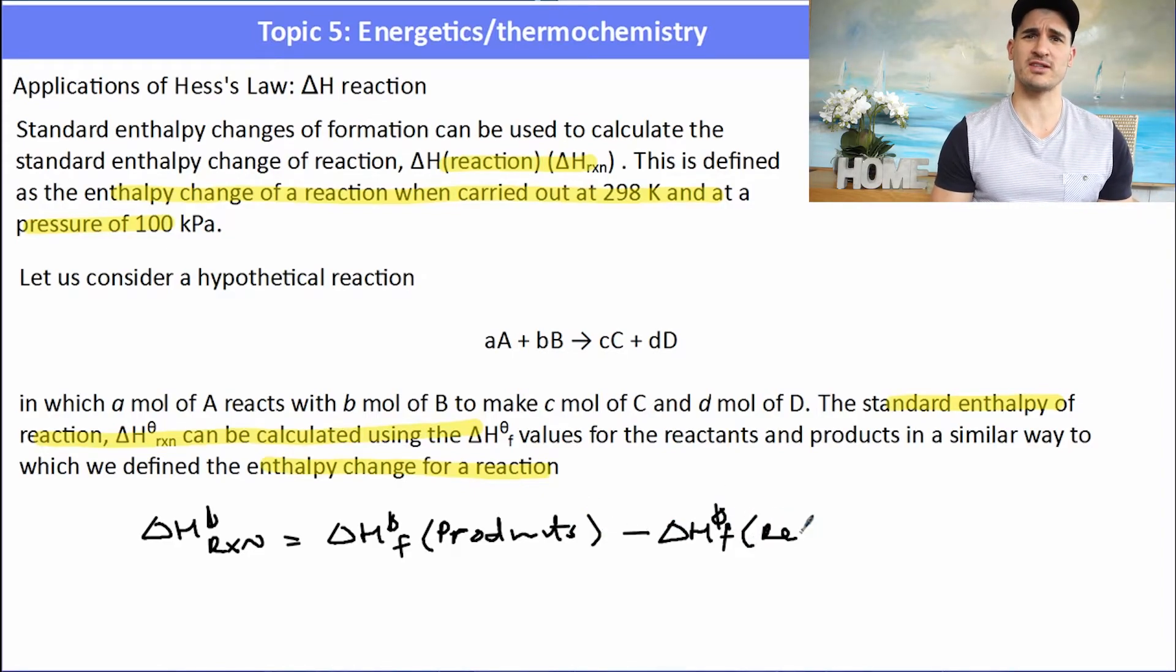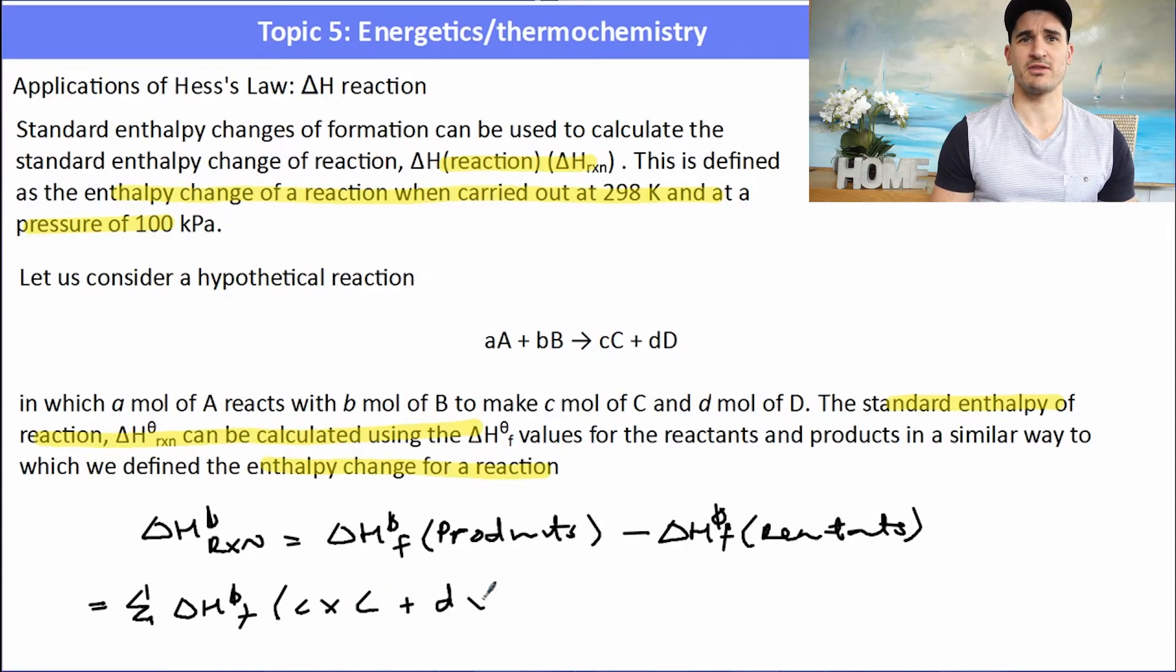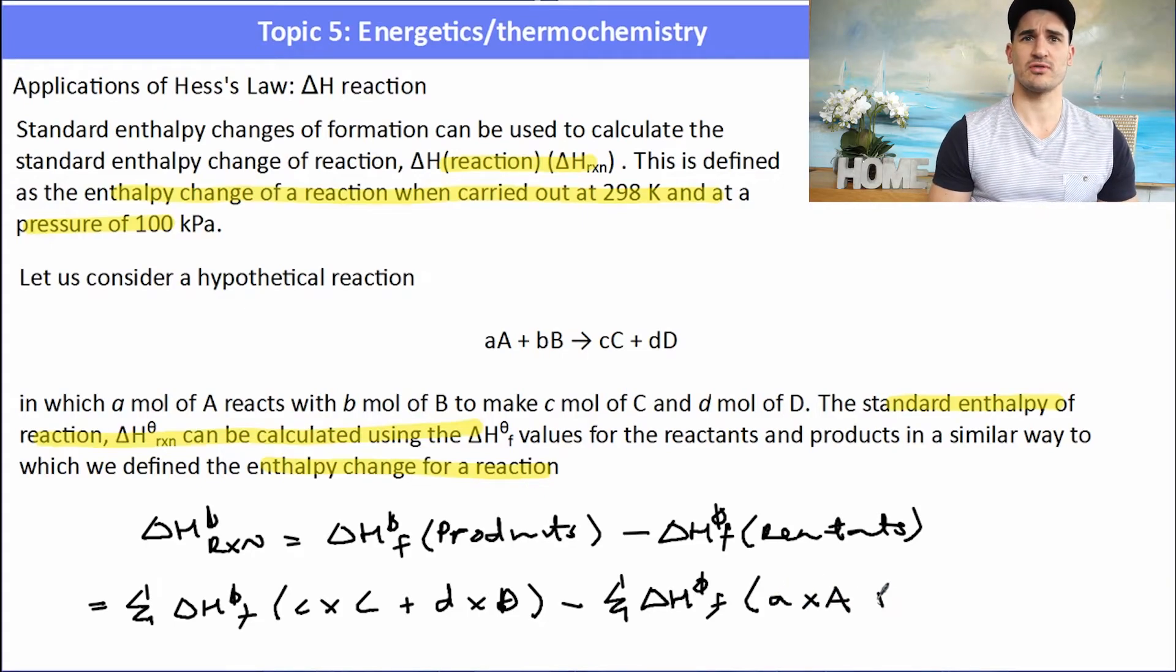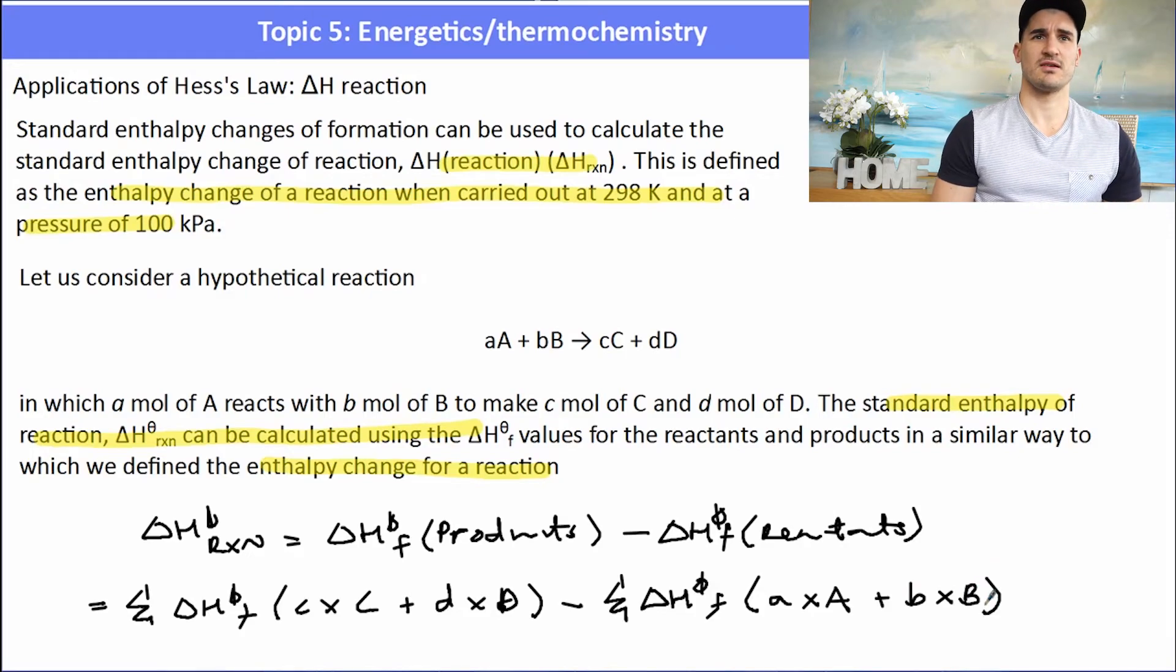Now if we have more than one reactant or product, what we have to do is multiply them by their stoichiometric coefficients and then add them together. So the delta H of reaction is simply the addition of the delta H of formation of the products multiplied by their coefficients plus the other product that we might have in the reaction. And then we take that away from the delta H, the sum of the delta H of formation of the reactants multiplied by their stoichiometric coefficients. So we have to be a little bit careful when we do this calculation, it can get a little bit messy, so make sure you do the setting out correctly. The example will demonstrate this a bit better.